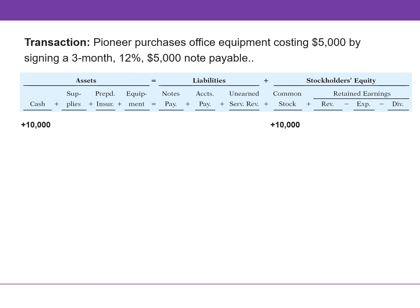In the next transaction, we obtain equipment by signing a three-month note. This transaction is impacting an asset account — equipment — and a liability, notes payable. Both accounts are increasing by $5,000.